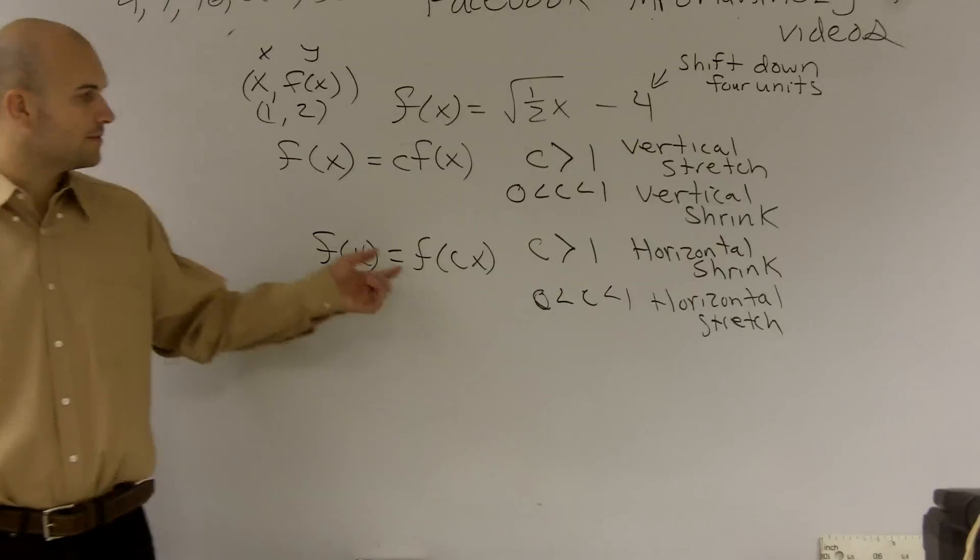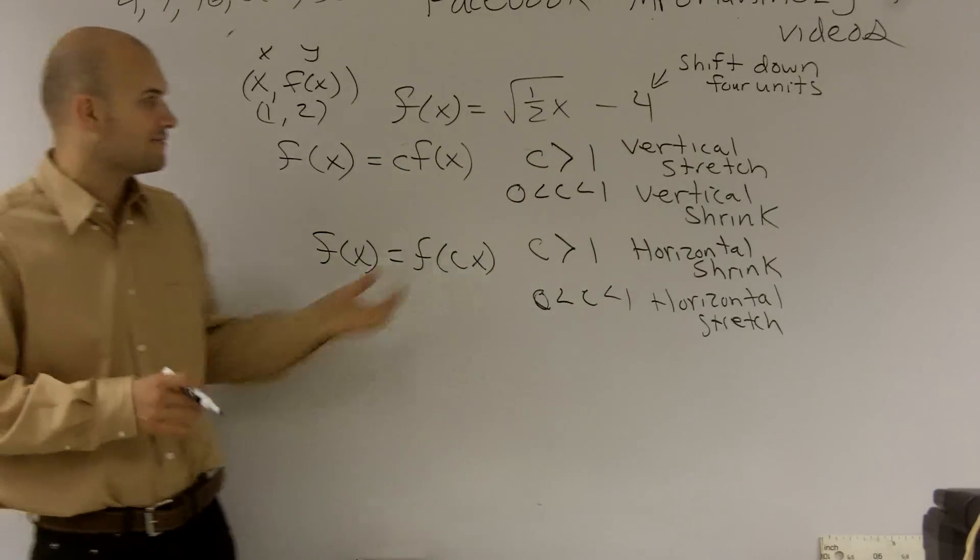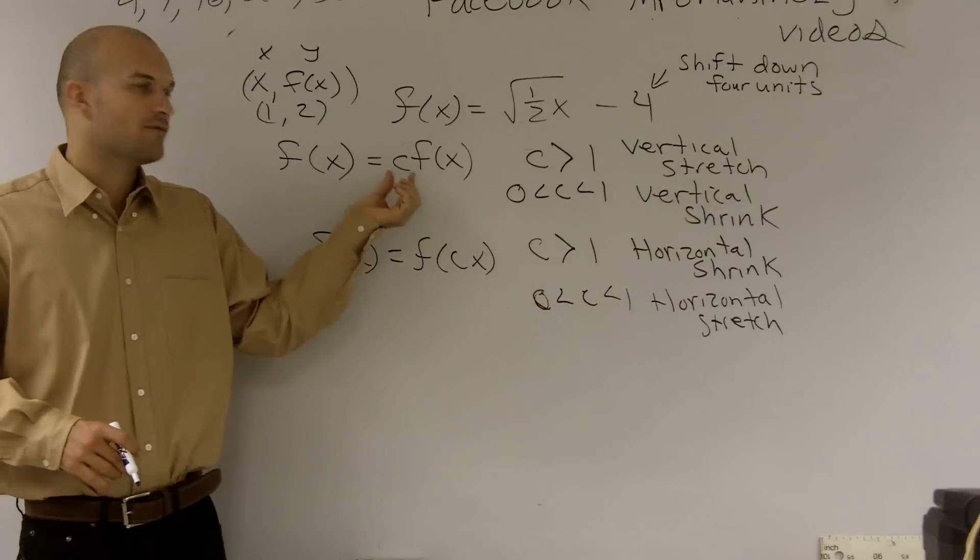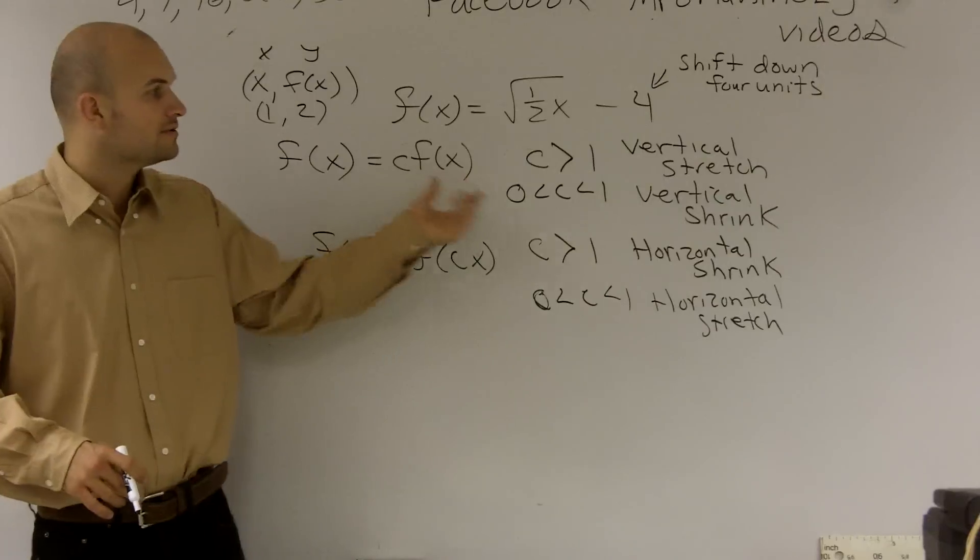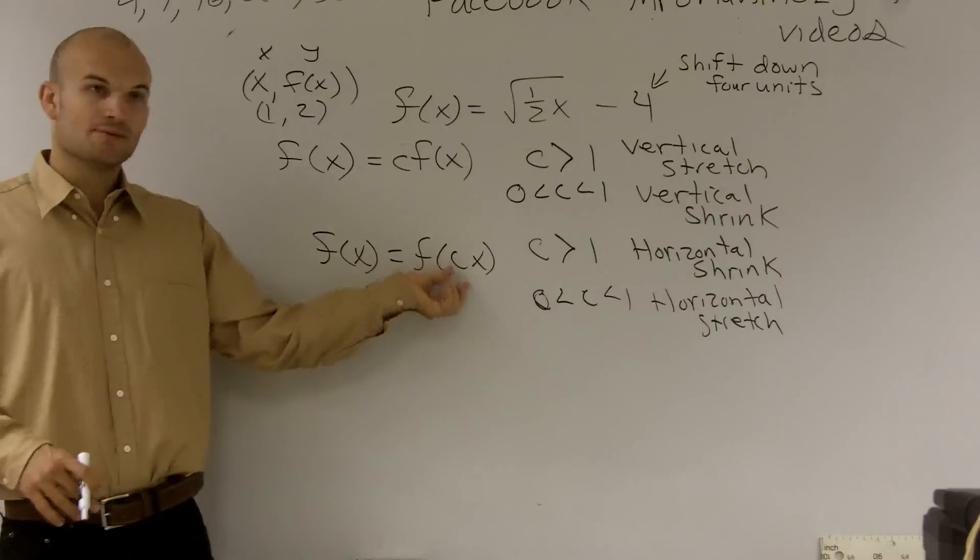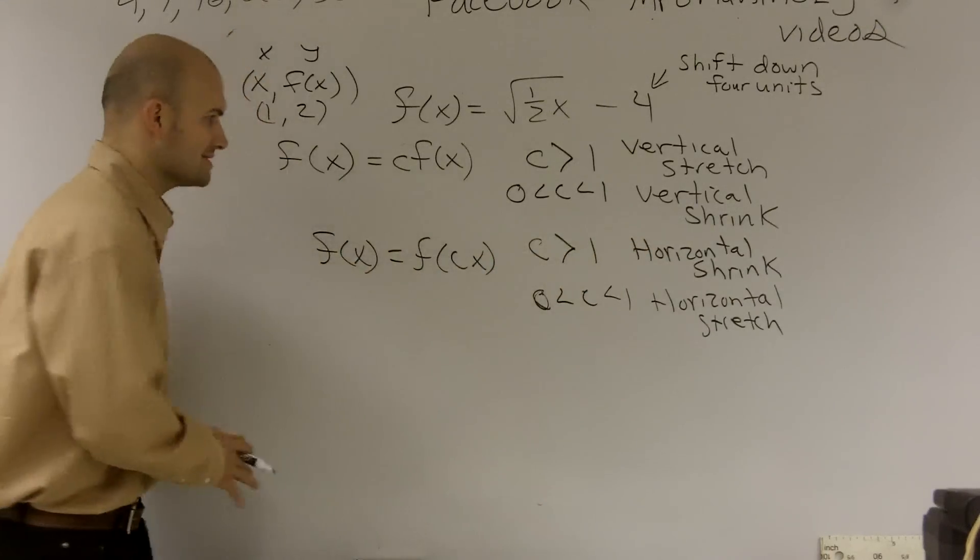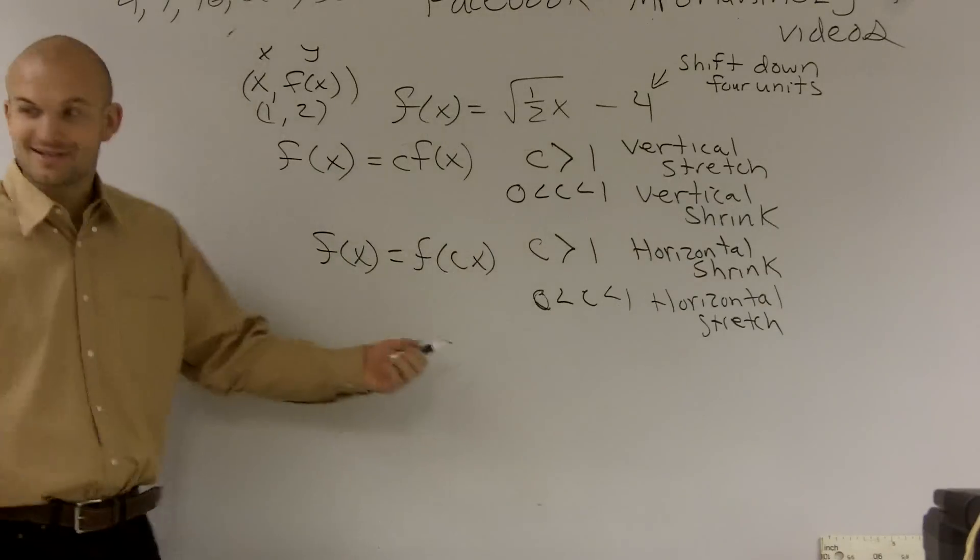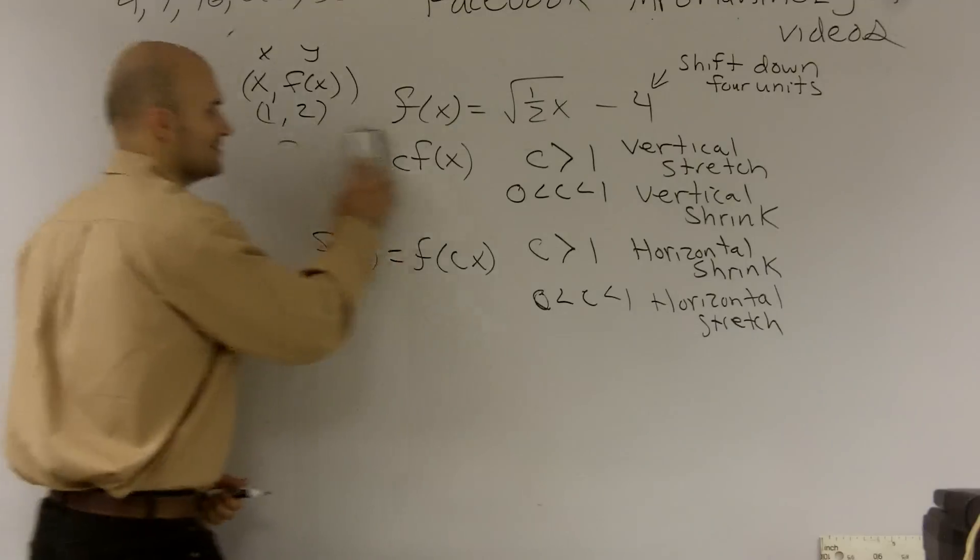All right? So you guys really got to make sure you remember just what's happening. The easiest way I like to always think about it is just look at what is your c doing. If it's multiplied by your function or your output value, then it's going to be something doing with the vertical stretch or shrink. And if you're multiplying by your input value or your x, it's going to be doing something to the horizontal. So let's actually look at the graph. Hope you guys can all take a look at this online so I don't have to worry about keeping it up here. So I'll just erase it.